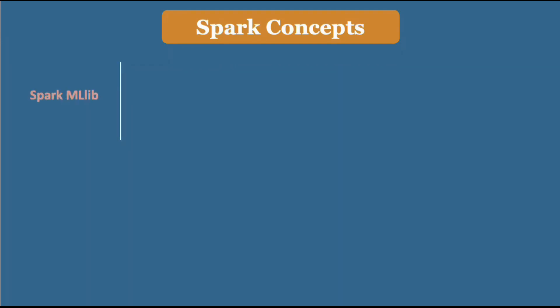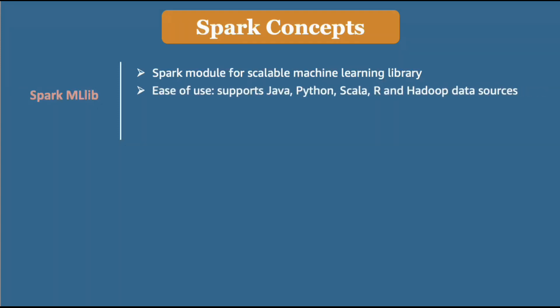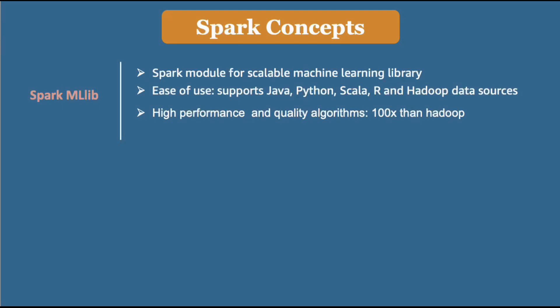One more module is Spark MLlib — it is a scalable machine learning library. It supports ease of use, with many languages supported including Java, Python, Scala, R, and Hadoop data sources. It provides high-performance, quality algorithms. For example, for iterative computation algorithms, Spark performs 100x better than typical Hadoop MapReduce operations.